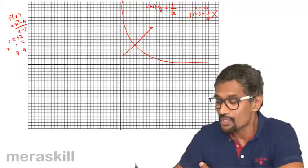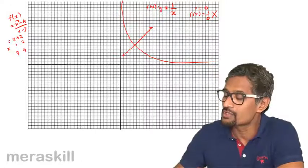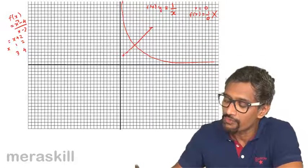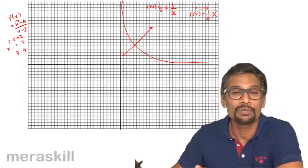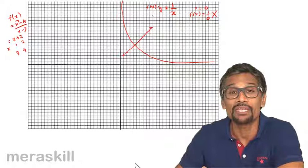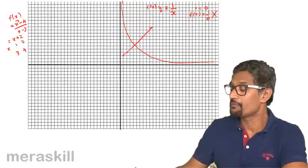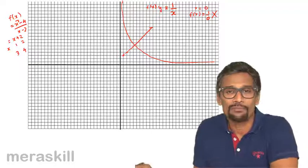So this also explains the concept of limits. As X approaches 0, the value of Y will approach a particular value but it will never become equal to that value, because X is also not becoming equal to that particular value. So just a graphical way of explaining the concept of limits.